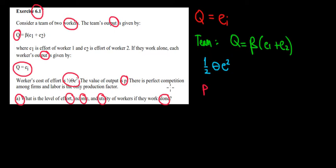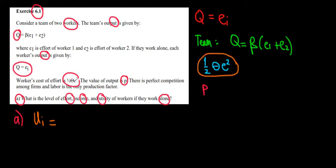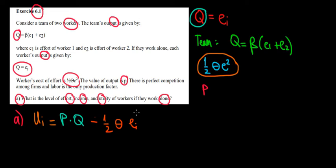This distinction — whether the company observes effort or not — is very important. To proceed, we need the utility function of a worker. Since we have the same output and cost functions for both, the utility function is symmetric and the same for each worker. The utility for one worker is the benefit (money made) minus the cost of effort. He earns revenue P times quantity produced, minus the cost of effort: minus one-half theta times e_i squared.